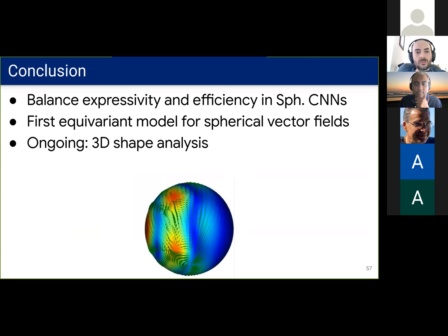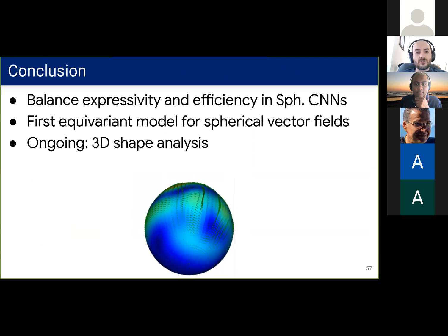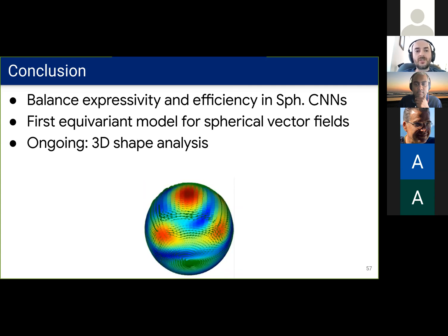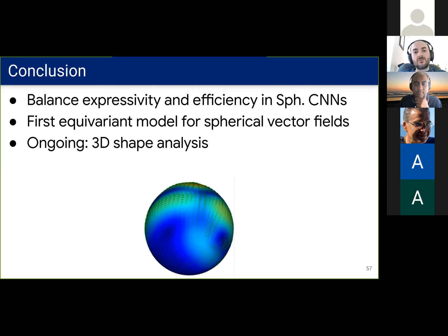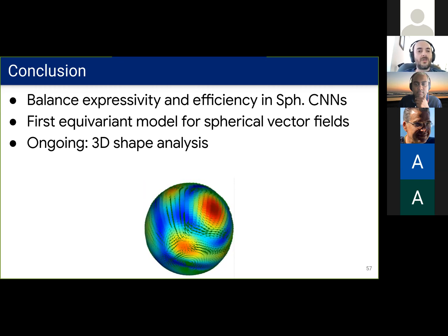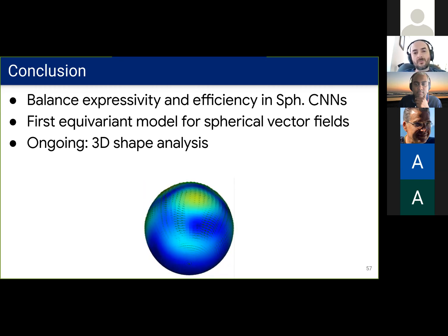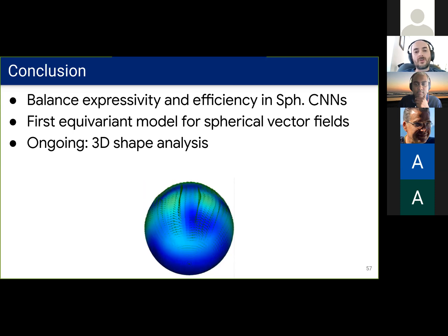Now to conclude, this model strikes the balance between expressivity and computational efficiency. It is strictly more expressive than the isotropic spherical CNNs. And it's more efficient than the SO(3)-based spherical CNNs. So we can have bigger networks and achieve better performance. It's also one of the first equivariant models for equivariant vector fields. We're currently working to apply it to 3D shape analysis, but there are many more scientific applications to be explored.